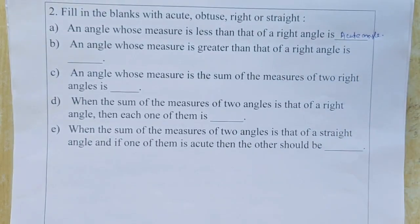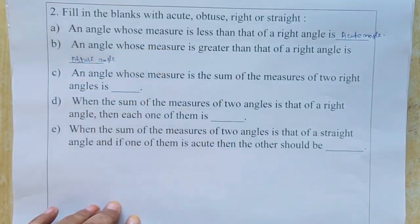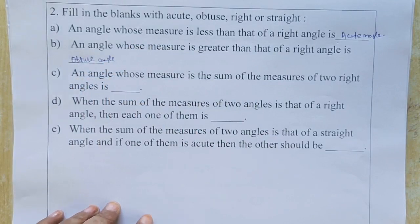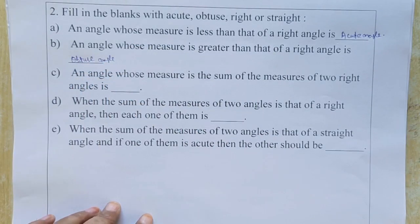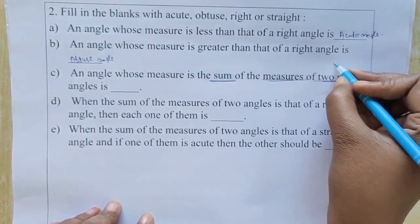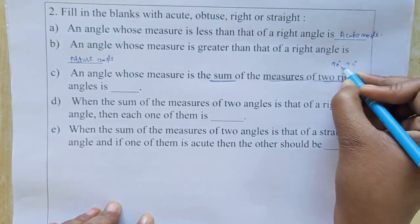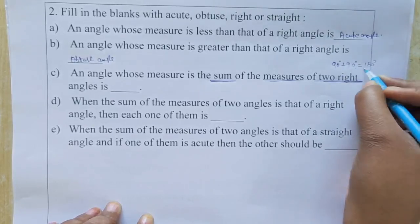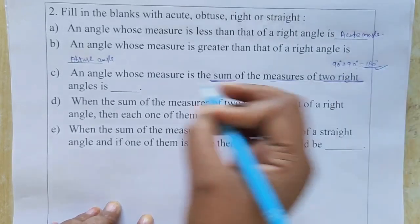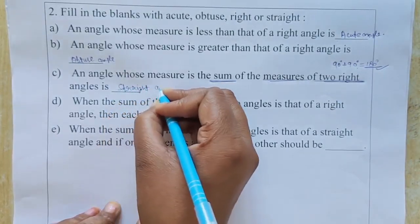Part B — an angle whose measure is greater than that of a right angle. Greater than 90 degrees means it is an obtuse angle. Part C — an angle whose measure is the sum of the measures of two right angles. One right angle is 90 degrees, so two right angles give 180 degrees, which is a straight angle.